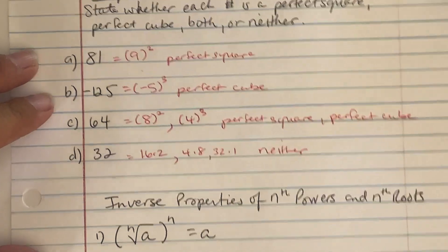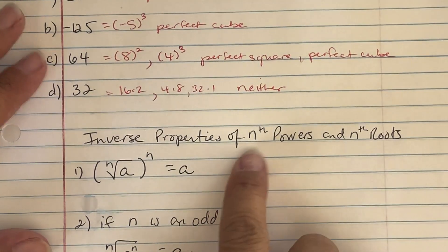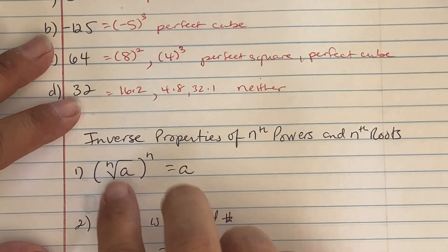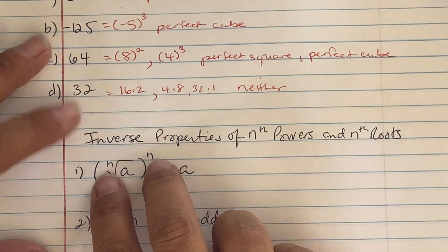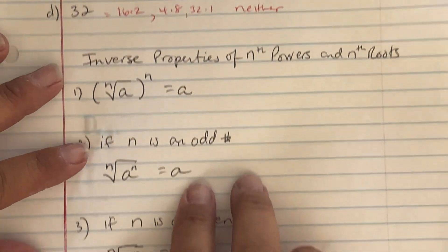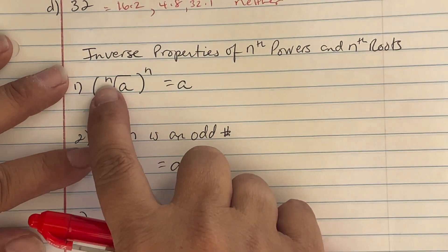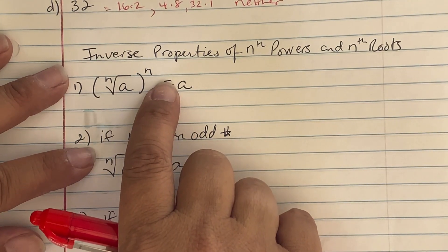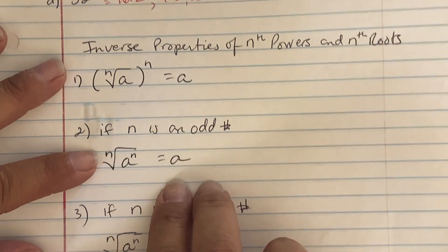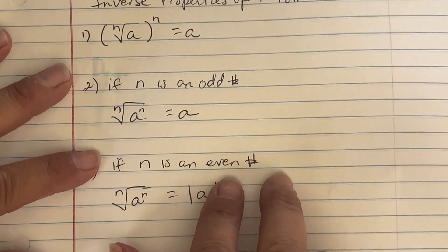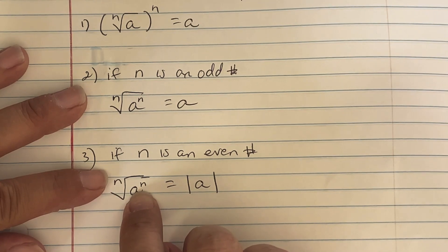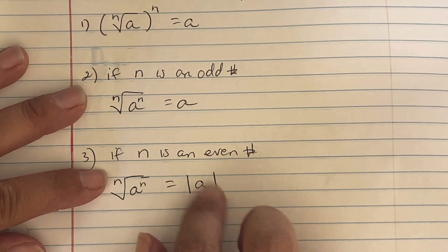Inverse properties of nth powers and nth roots: if you see the nth root of a all raised to the nth power, the index and the power match, so they cancel out and the inside comes out. If n is odd, you just get a. But if n is even — say it's a 4th root raised to a power of 4 — you have to put the inside in absolute value bars and then simplify.